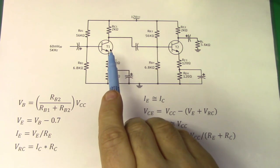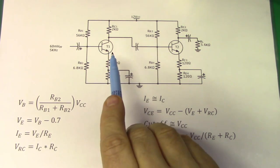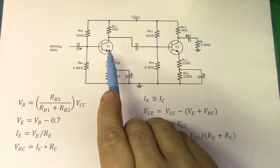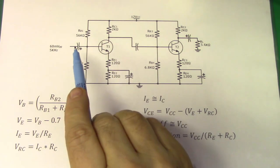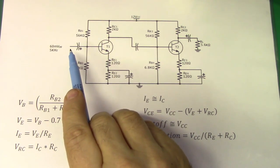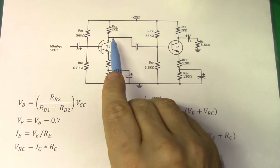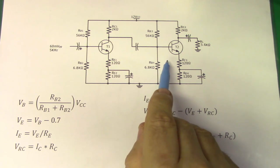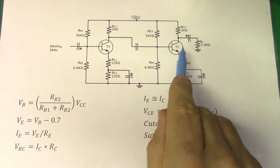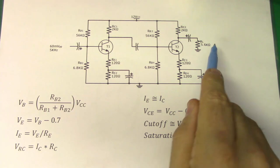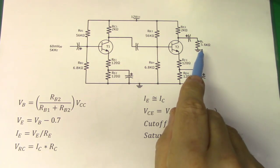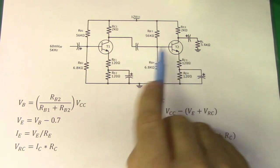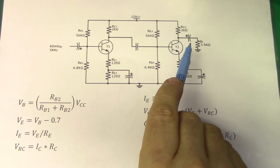Each stage is going to flip the signal 180 degrees. So if we're going positive on the first stage, we're going to be going negative on the output of that stage, negative on the input of the next stage, and then that one's going to flip another 180 degrees. So we're going to be back in phase on our output RL. There might be a slight phase shift between input and output because of going through all of these capacitors, and the reactances could affect the phase.